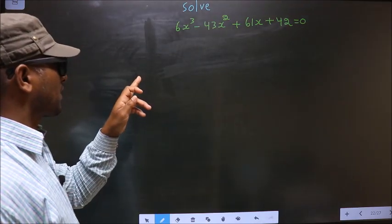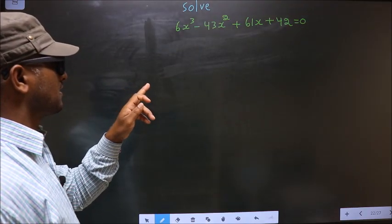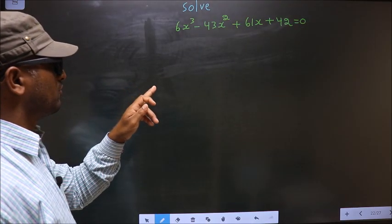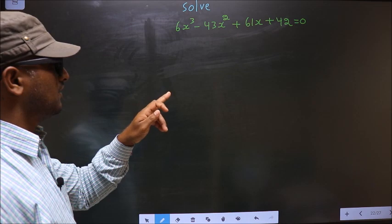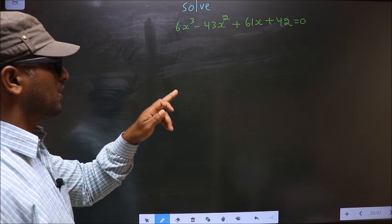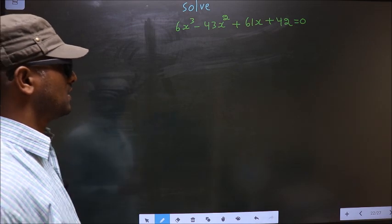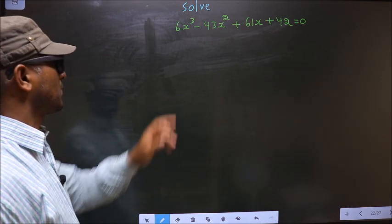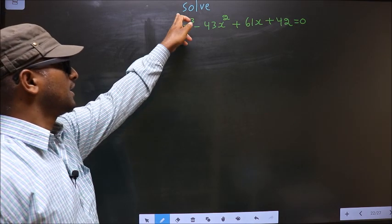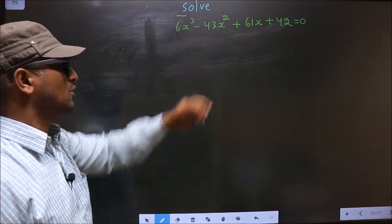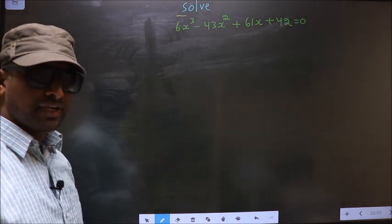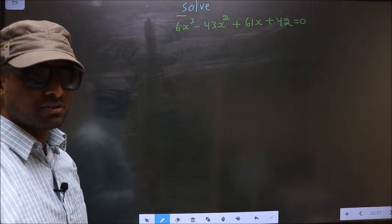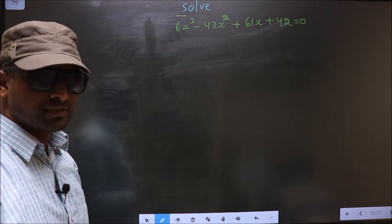Solve 6x³ minus 43x² plus 61x plus 42 equal to 0. We are told to solve, so we should find the values of x.